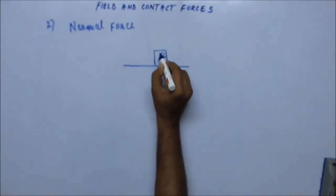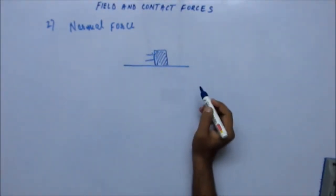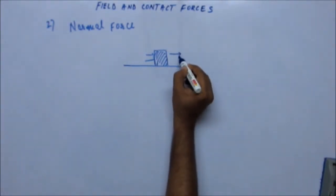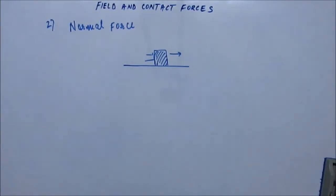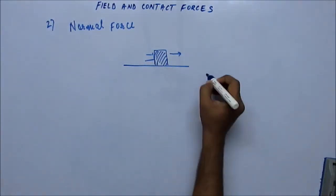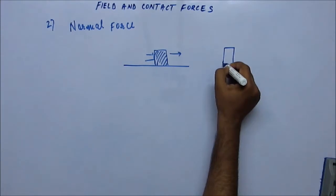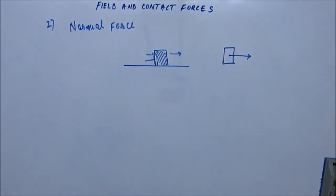Similarly, suppose we are applying some force with our hand and the block starts to move in the horizontal direction. Previously it was at rest — Newton's first law says a block will not move unless there is some net external force. Now the block is moving, which means there is a net external force, and our hand is applying some force on the block in that direction.